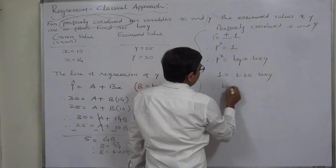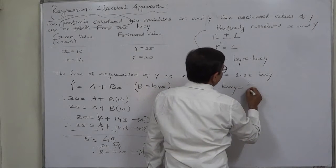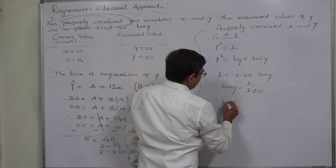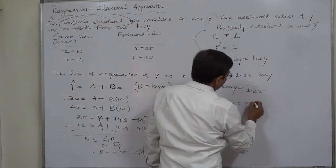Therefore, b x y equals to 1 upon 1.25. Therefore, b x y equals to 0.8.